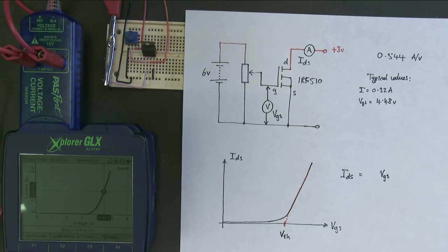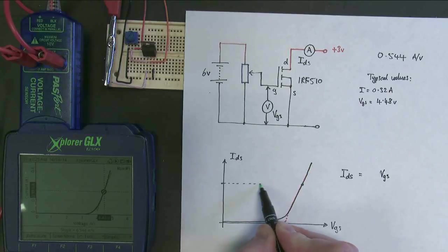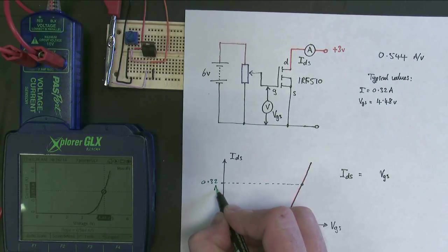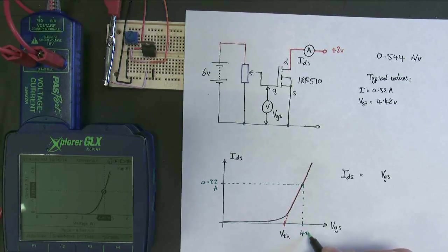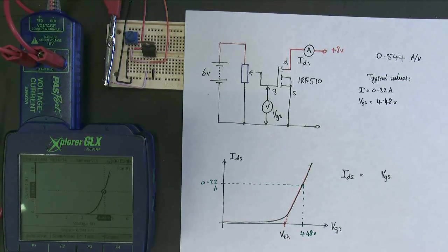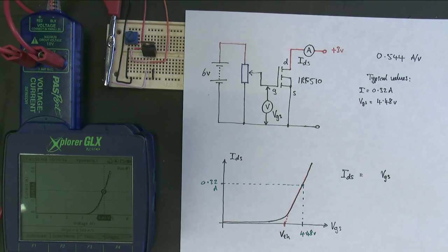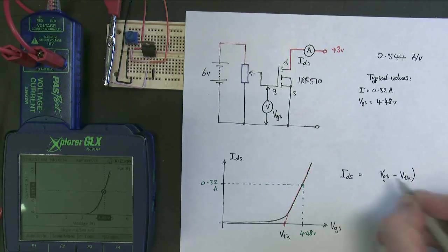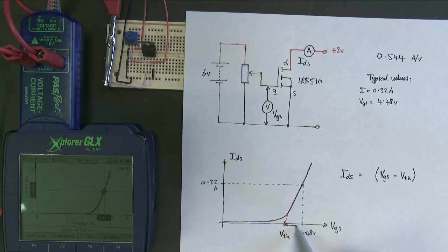And what I'm really interested in is how much greater I go along here. Because when I had my values from my graph, what I did is I looked at this point just here. These are the values I took off my data logger. So this was 0.32 amps. And this value here was 4.48 volts. And what I'm really interested in is not the 4.48, but I'm interested in how far it's gone from there to there, how much it's turned on by. So what I actually need to do on my x-axis is have the gate source voltage minus the threshold voltage.